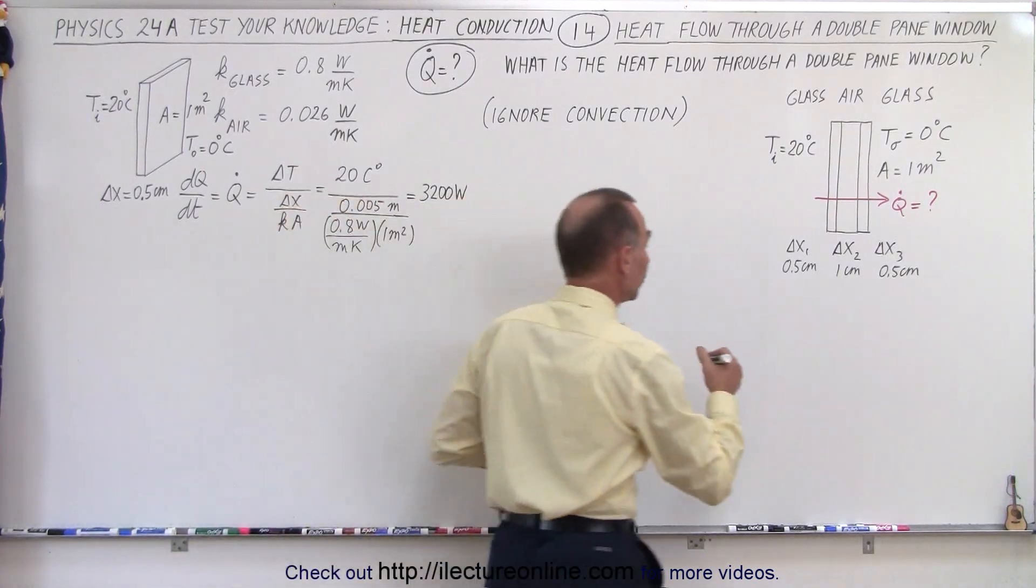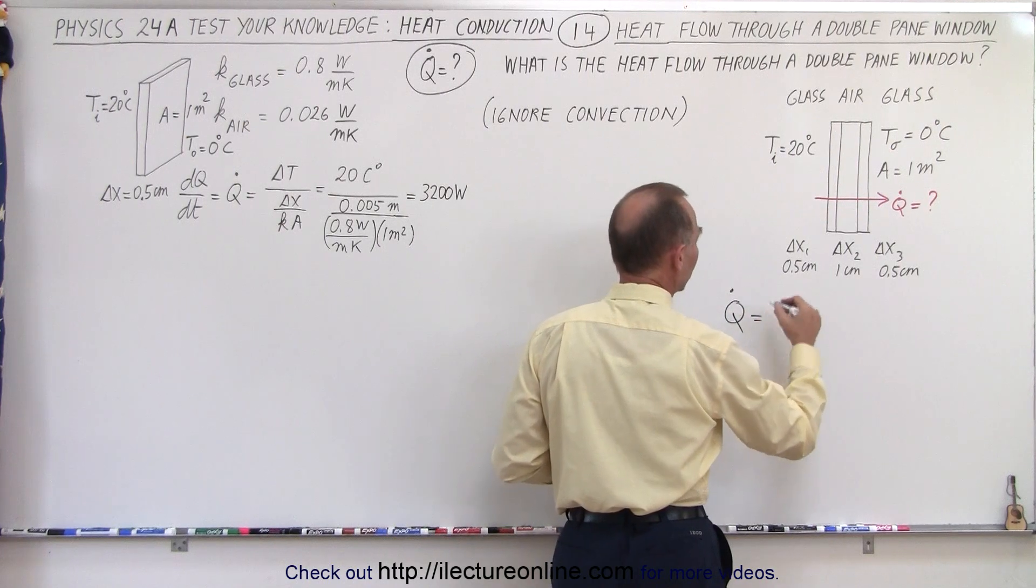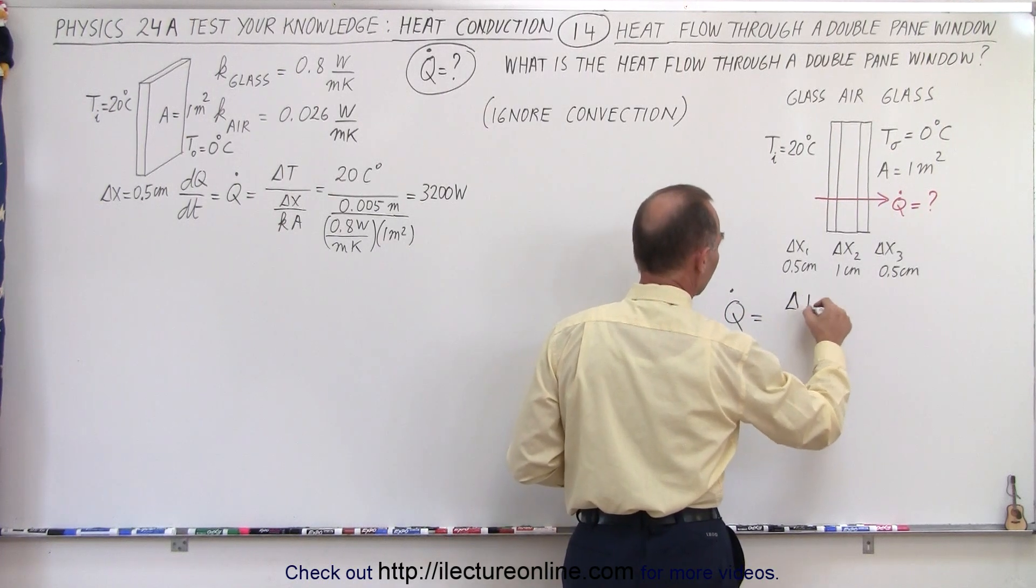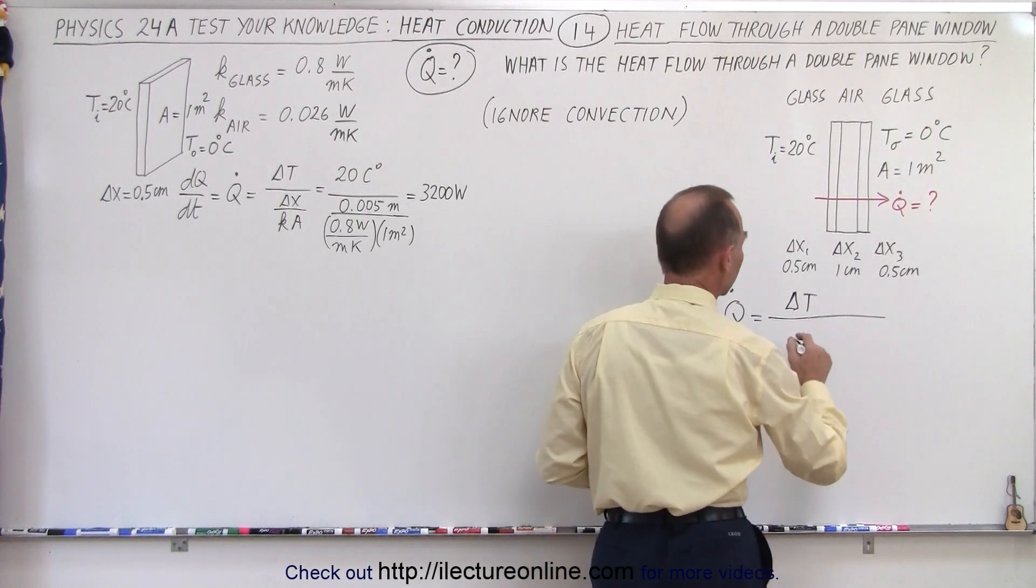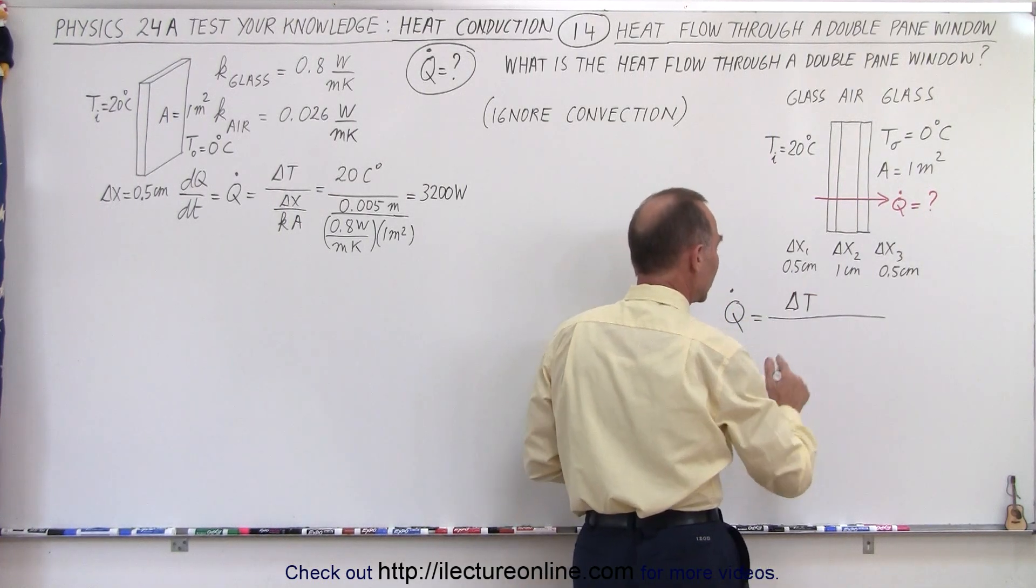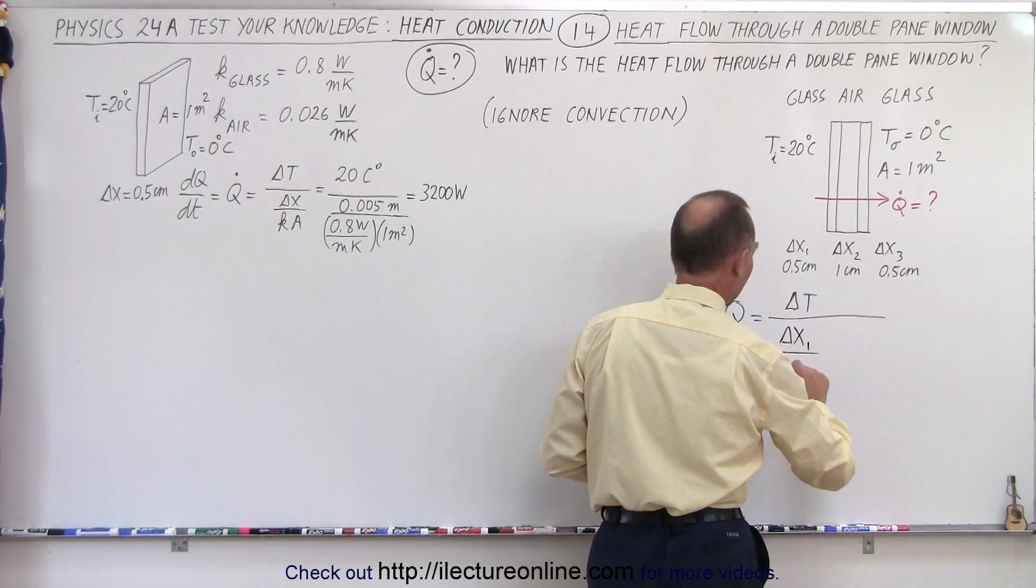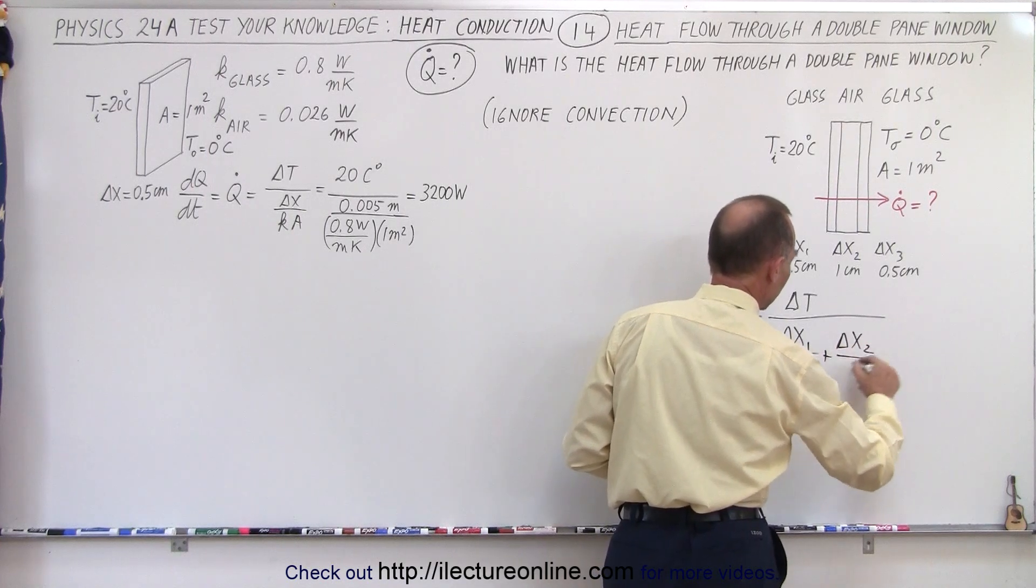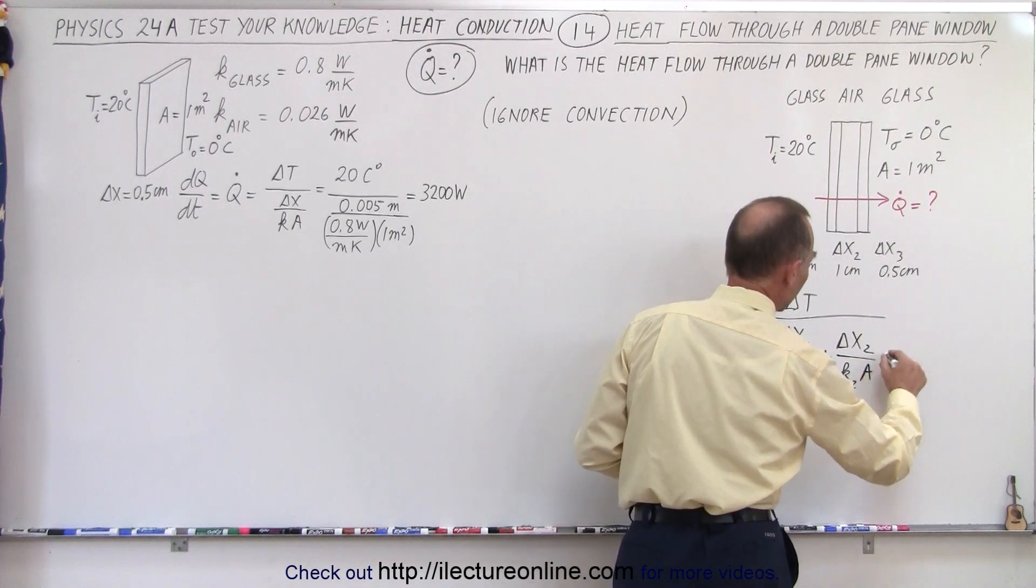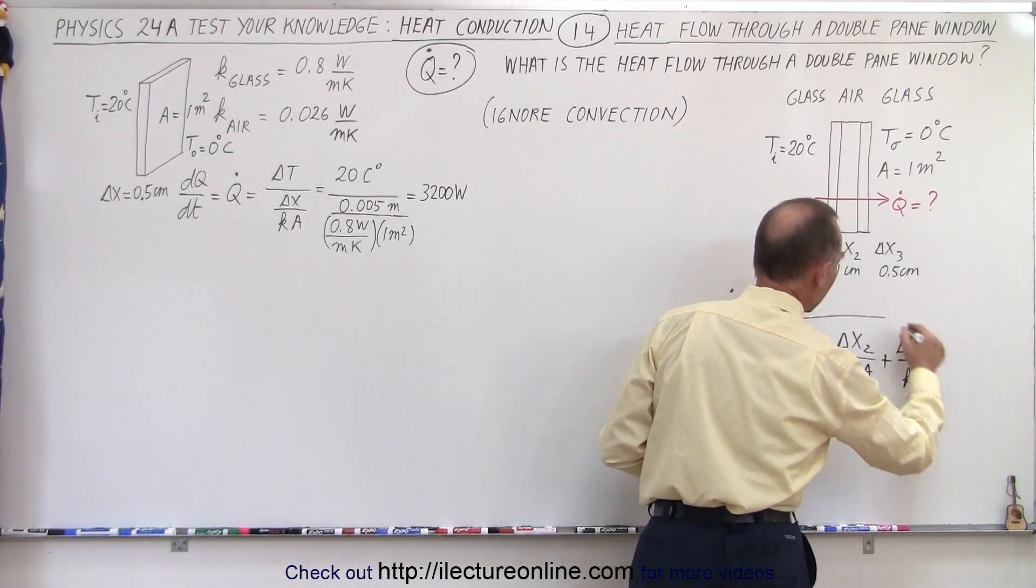Now the equation we're going to use is the equation we saw in the previous video, where Q̇ is equal to the difference in the temperature, delta T from the inside to the outside, divided by the sum of all the heat resistances. So we have delta X for the first layer divided by K1 times A, plus delta X of the second layer divided by K2 times A, plus delta X of the third layer divided by K3 times A. And so let's go ahead and plug in all the values.